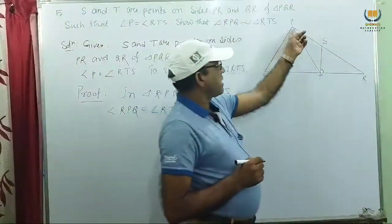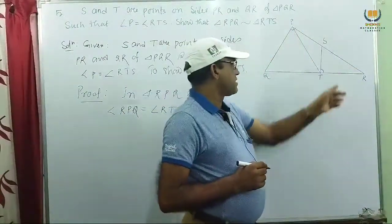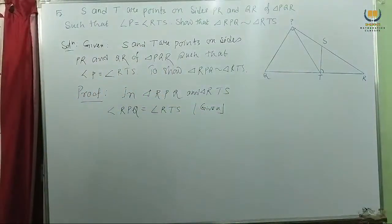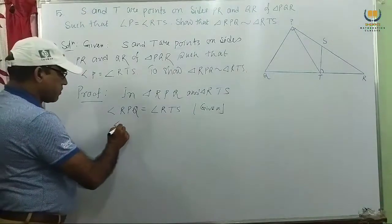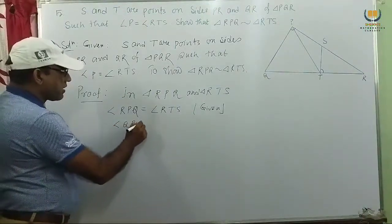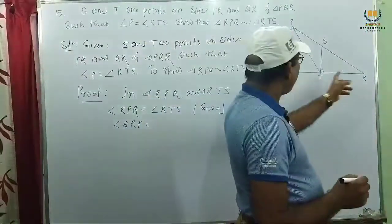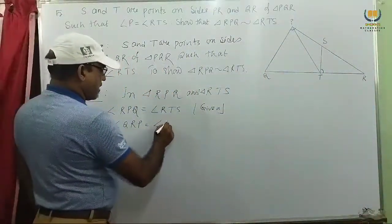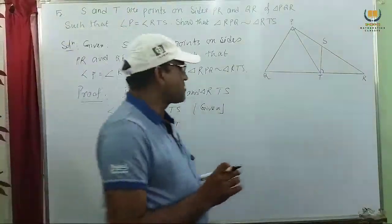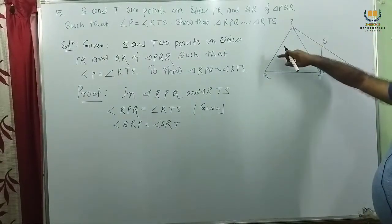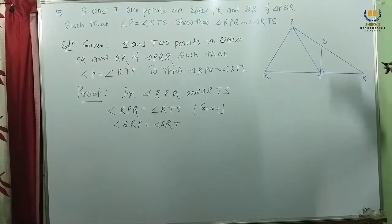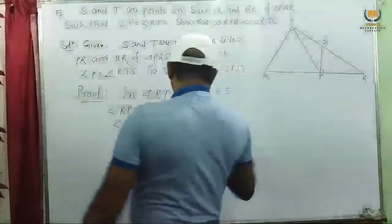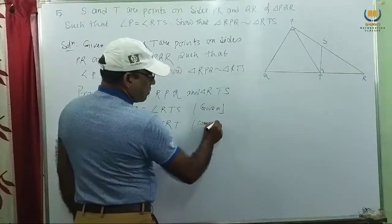These two angles, angle RPQ and angle RTS, are equal because this is given — according to the question these two are equal. Again, angle QRP and angle SRT — this angle is common in both triangles. In both the triangles we have this common angle.